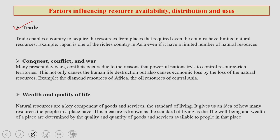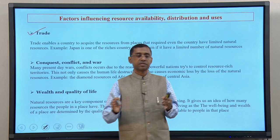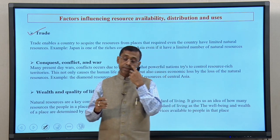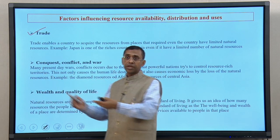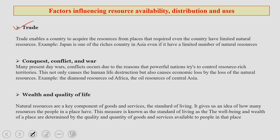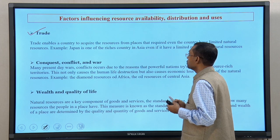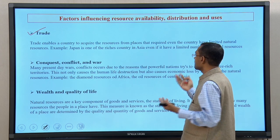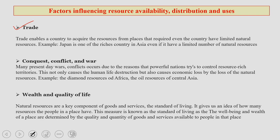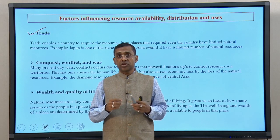The next factor is trade. When economic activities in place B are higher than place A, trade will also follow there. People will try to move towards areas with higher opportunity for trade, which actually enables a country to acquire resources from different places even if the country has limited natural resources. Take the case of Japan — a small country, yet one of the best developed countries in the world.